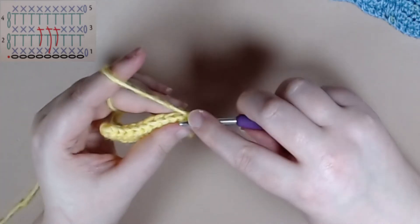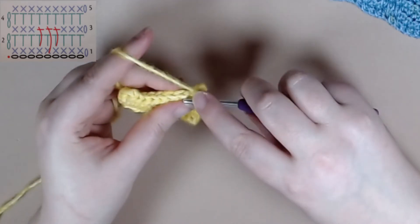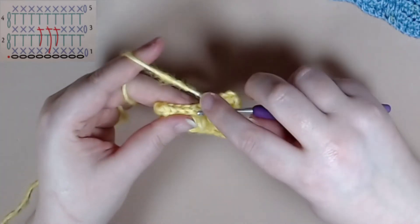So row five you just chain one and you double crochet all the way to the end of the row. Again the repeat for this pattern is row two through five.